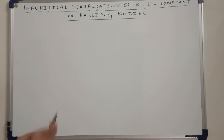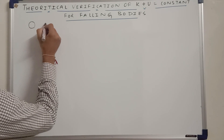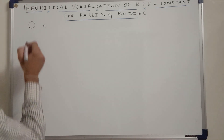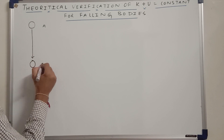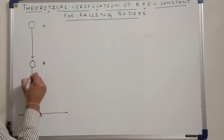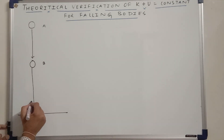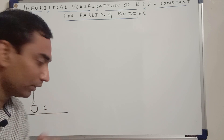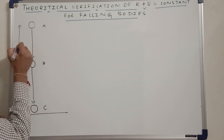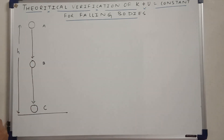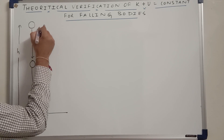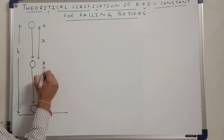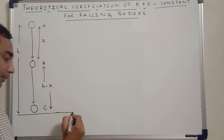Let me consider a ball which was at location A, and we are dropping the ball from location A. The ball reaches location B, and finally this is the ground. Location C is just above the ground — a negligible distance above the ground. Initially the ball was at height H above the ground. The distance from A to B I am going to call X. So if this is H and this is X, then this will become H minus X. This is our ground.